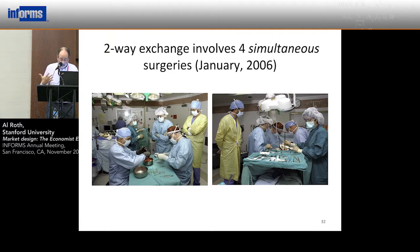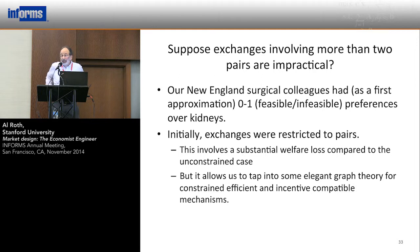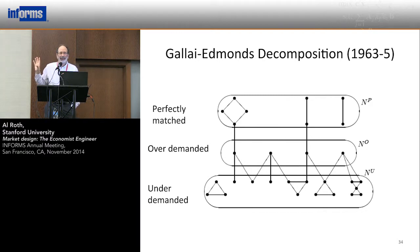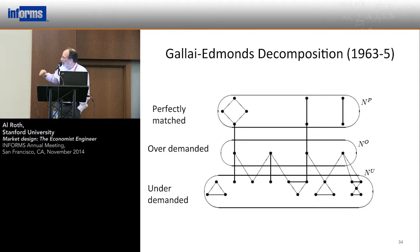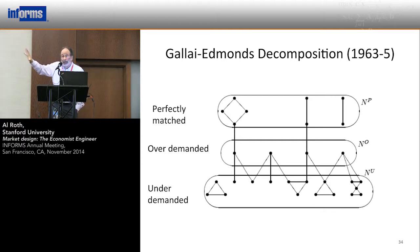Two-way exchange gets you into old, venerable operations research graph theory. This is a matching problem — a maximal matching is a selection of edges between nodes that covers as many nodes as possible. Think of the nodes as patient-donor pairs and the edges as compatibility. The Gallai-Edmonds decomposition says you're going to have under-demanded nodes, over-demanded nodes, and perfectly matched nodes. Now putting in kidney information: here's a blood type map — if you're blood type O, you can give a kidney to anyone but can only receive from O's; if you're A, you can give to A or AB; if you're B, you can give to B or AB; if you're AB, you can receive from everyone but only give to ABs.